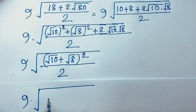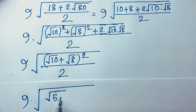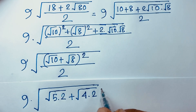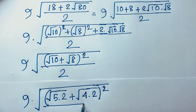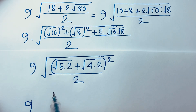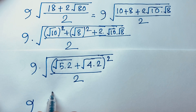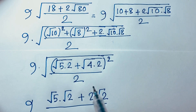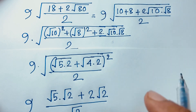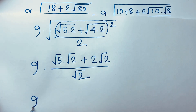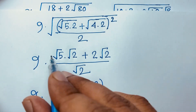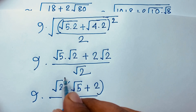Square root 10 I consider as square root 5 times 2, which is square root 5 times square root 2, whole squared over 2. This square cancels, giving square root 5 times square root 2, plus square root 4 which is 2, times square root 2, over square root 2. Square root 2 is common, so dividing gives square root 5 plus 2.